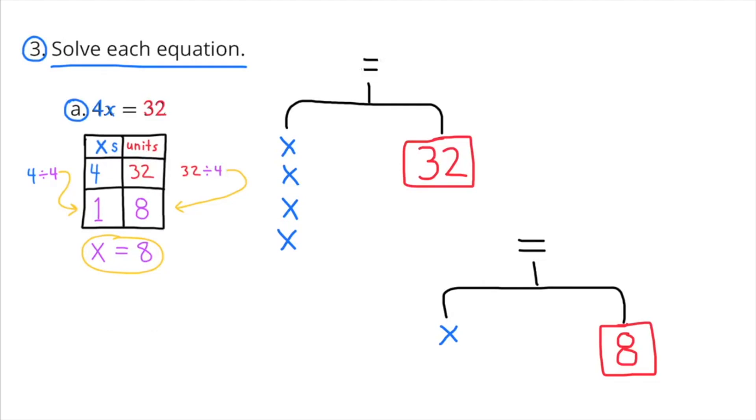I also drew a couple hangers. The first hanger shows the hanger balanced with 4 X's on one side and 32 units on the other. The second hanger shows 1 X on the left side and 8 units on the right side still in balance, so 8 equals X. So once again, 4 X divided by 4 equals 1 X, and 32 divided by 4 equals 8. So X equals 8.